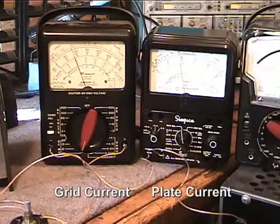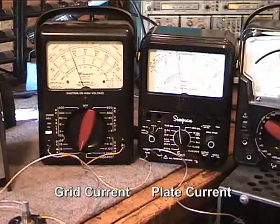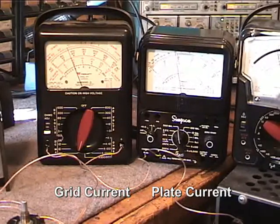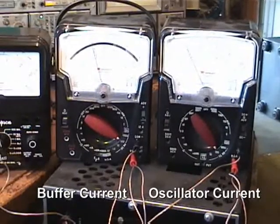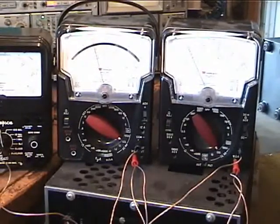And over on the right-hand side, we have four more meters. The first two are the grid current to the final amplifier and the plate current. And the other two meters are the current for the buffer and the plate current for the oscillator.